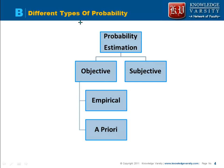Now what are the different types of probability? There are various ways wherein you can do a probability estimation. We will broadly define these ways into two groups. One is the objective estimation of the probability and another is the subjective estimation of the probability.